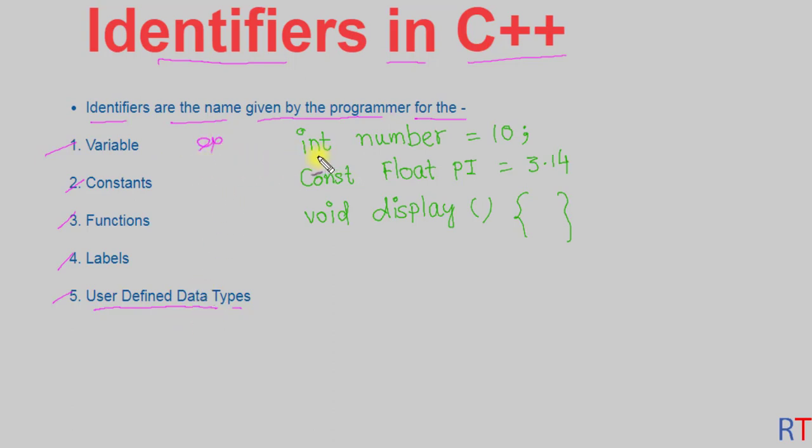Whenever we create a variable like 'int number', the variable name 'number' is an identifier given by the programmer. Similarly, when we create a constant, the name of the constant is also given by the programmer, so this is also an example of an identifier.